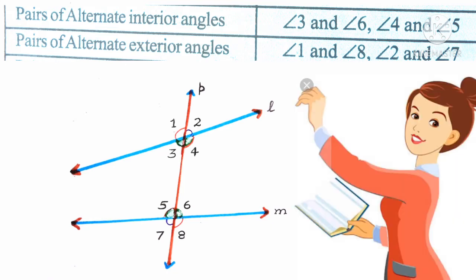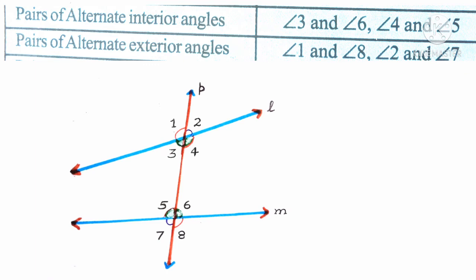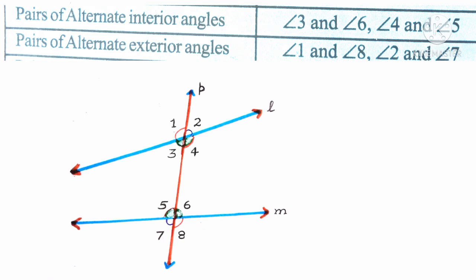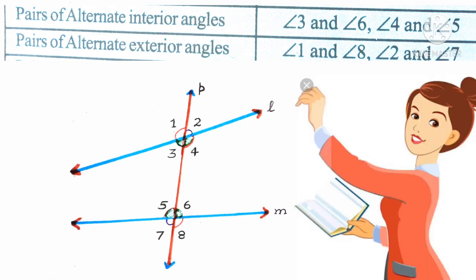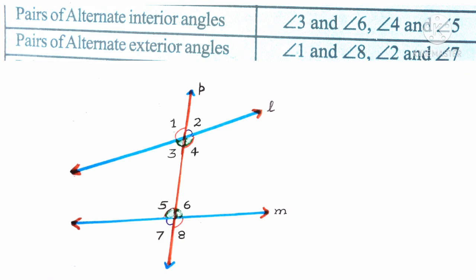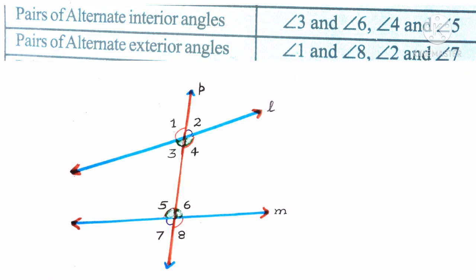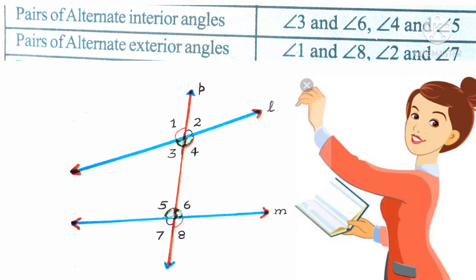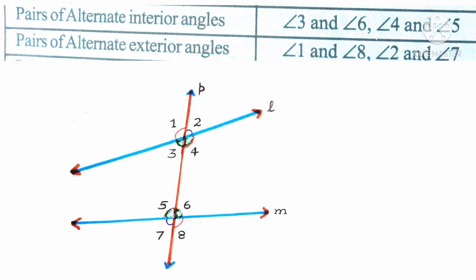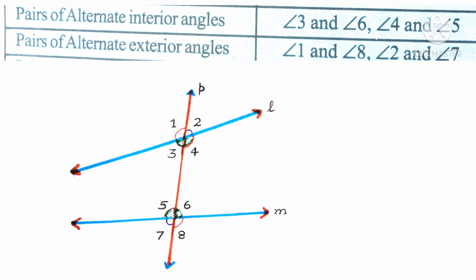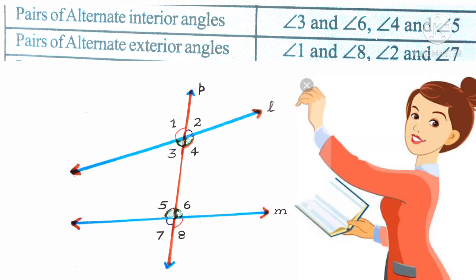Pairs of alternate interior angles. Now let us learn the pair of alternate interior angles. Interior angles lie within the two lines. They are angles 3, 4, 5 and 6. Alternate means they are to the opposite sides of the transversal. There are two pairs of alternate interior angles: angle 3 and angle 6 form a pair, and angle 4 and angle 5 form another pair. Remember, angle 3 and angle 4 are also interior angles but they are not alternate angles because alternate interior angles should have different vertices.